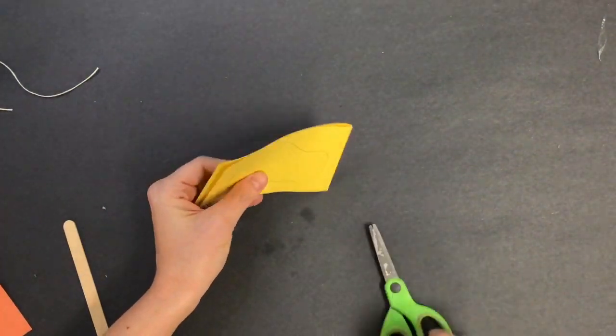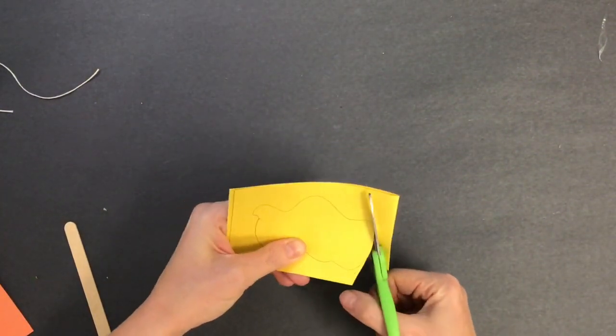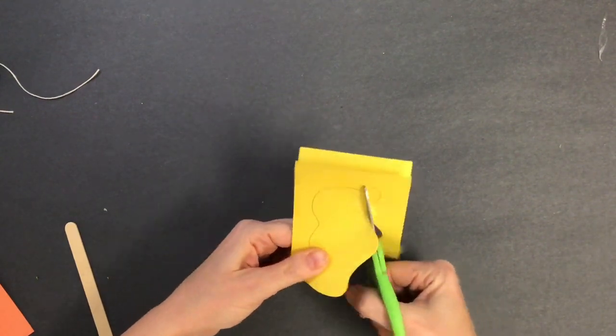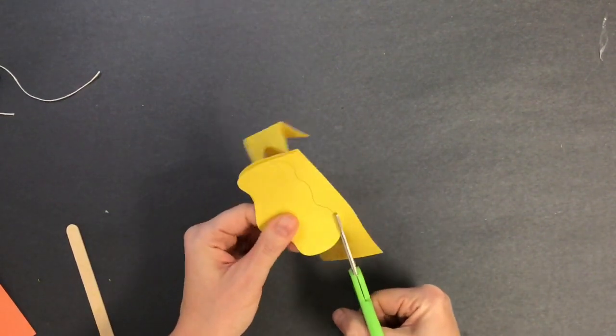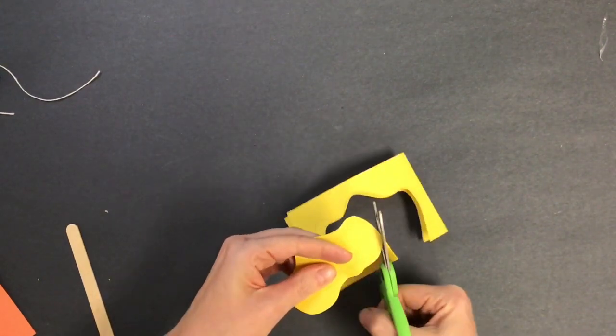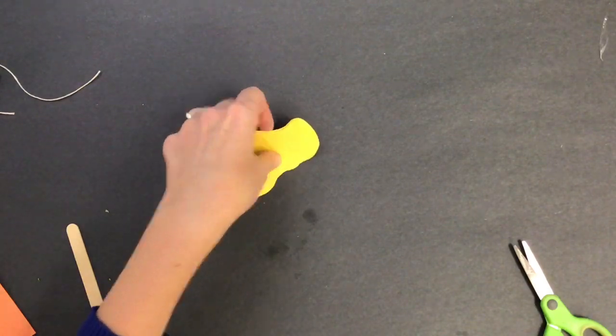Step two, you're going to cut the shape. Be sure that as you cut the shape, you keep the paper folded, and you pinch both papers together so that when it is finished, you'll have two identical shapes that look the exact same. You can see how my shapes look identical.